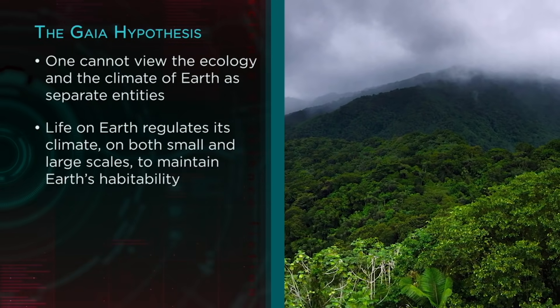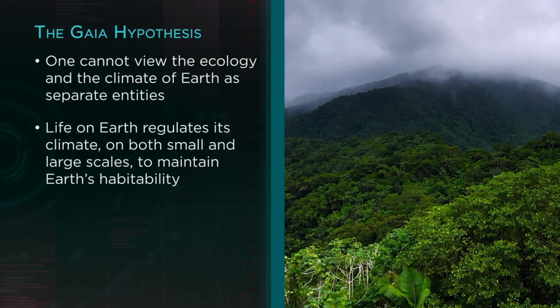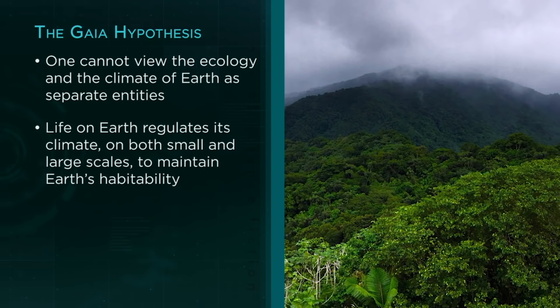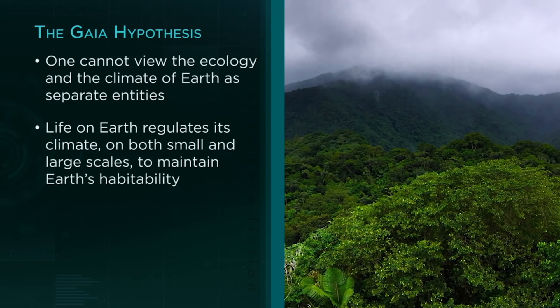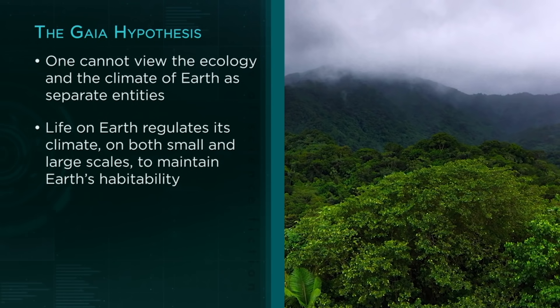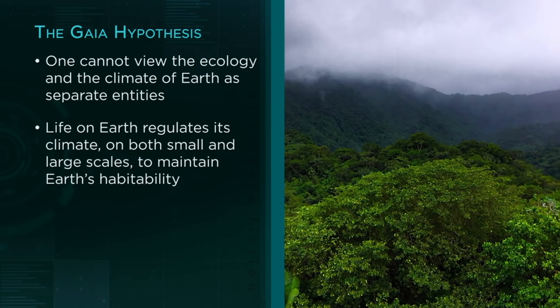The Gaia hypothesis is that one cannot view the ecology and the climate of Earth as separate entities. Rather, life on Earth regulates its climate on both small and large scales to maintain Earth's habitability. This was a controversial idea in the 1970s and still remains one. Detractors of the idea focus on the fact that, naively, it seems to imply a purpose to evolution and the development of complicated ecologies. This has been called mysticism by some.